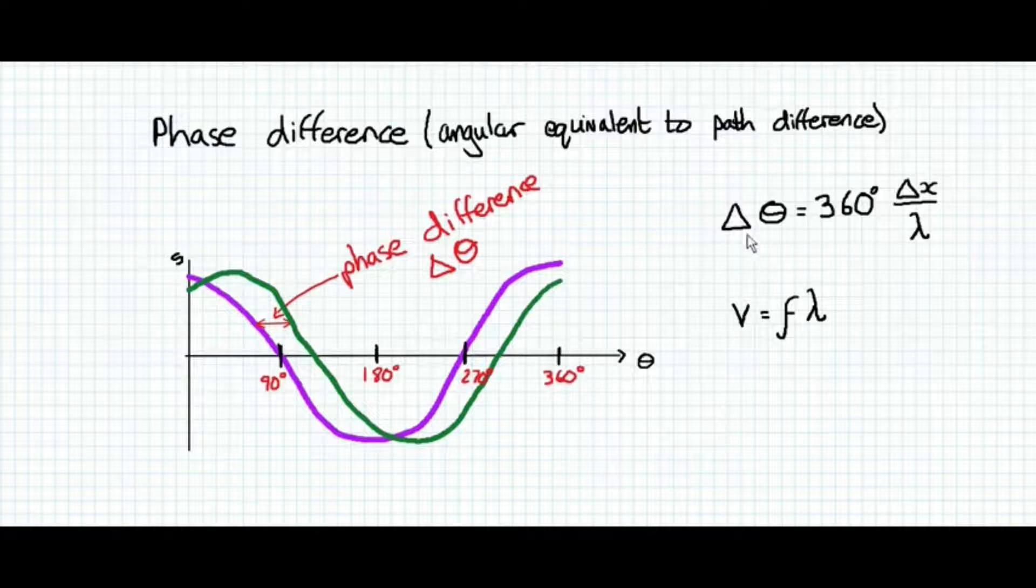Delta theta can be calculated as a fraction of a wave multiplied by the angle that represents a full wave. And what we're going to use for a full wave is 360 degrees. We'll leave radians for another day. And to describe the fraction of how far through a wave we're looking, we can use the path difference divided by the wavelength. Another useful equation is going to be that the speed of a wave is equal to the wave frequency multiplied by the wavelength.